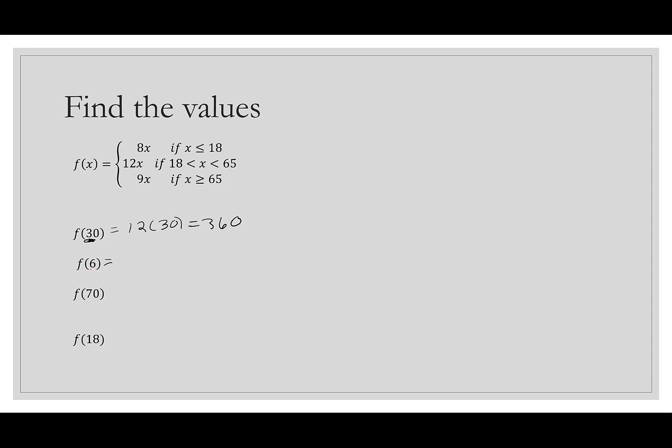Then for 6. 6 is less than 18, so I want to use the first part. So this is 8 times 6, which is 48. 70. When I look at 70, 70 is over 65, so we're going to do 9 times 70, which is 630.